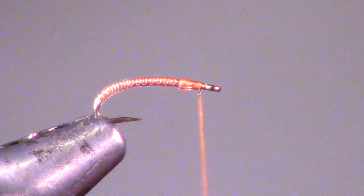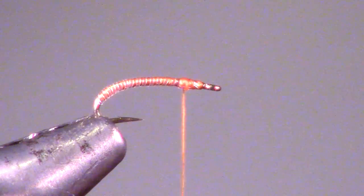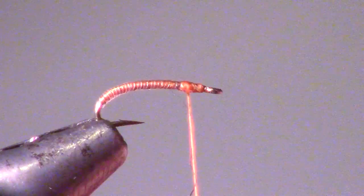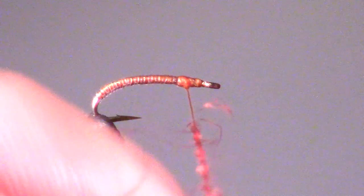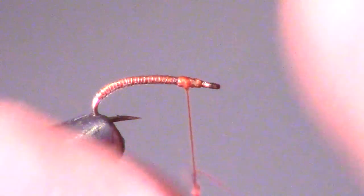Trim off the tag end of the flashaboo and wrap your thread back a few wraps. Now we are going to add some red strip tinsel type dubbing to our thread. In this case I am using a product called superflash dubbing.